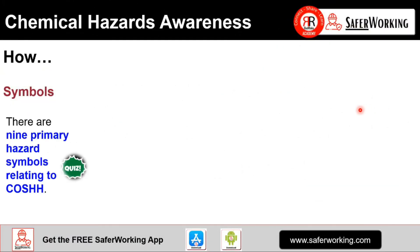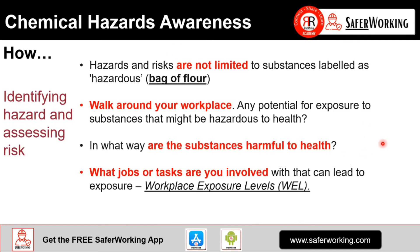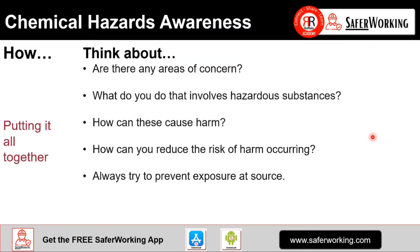In terms of COSHH, there are nine primary hazard symbols, ranging from a toxic danger warning sign through to corrosive and compressed gas. Note the quiz symbol here. It's important to note that hazards and risks are not limited to substances labelled as hazardous — a bag of flour is a common example. You need to walk around your workplace to check for exposure to potentially harmful substances, consider how they are harmful to health, what jobs or tasks involve exposure, and how you can reduce the risk of harm. It's always better to try to prevent exposure at source.